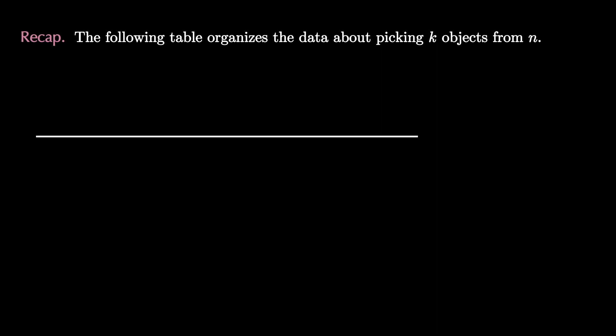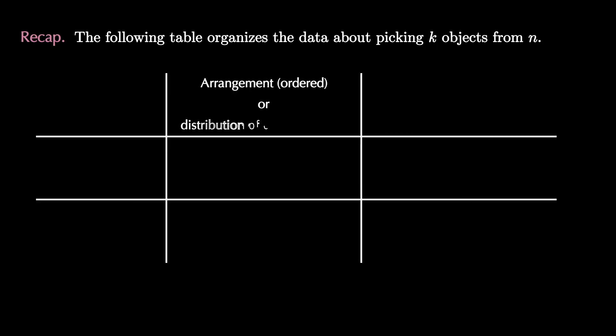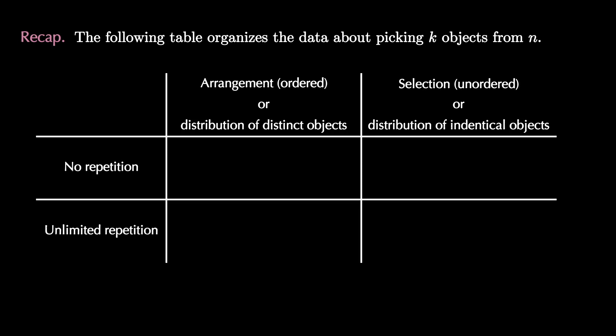Let's finish this video by following up about counting with and without repetition. We'll organize our data so that we have strategies going forward. Let's build a table that organizes the data about picking k objects from n. Along the top we can consider arrangement which are ordered objects or distribution of distinct objects or a selection which is unordered or a distribution of identical objects. And on the left we consider no repetition or unlimited repetition. For the upper left box there are P(n,k) ways to select k objects from n where we arrange them and we don't allow repetition.